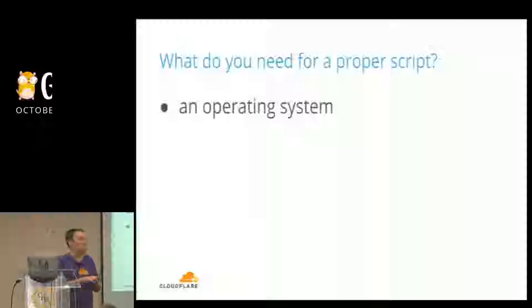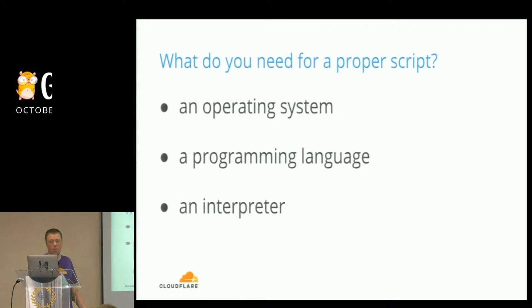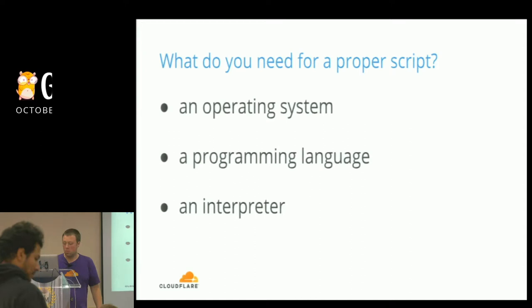So how do we do that? Let's first understand what environment we need for a proper script to run. We probably need three things: first, an operating system; second, a programming language to write scripts in; and finally, an interpreter, which will execute your script and interpret the code you wrote to do the things you wanted.